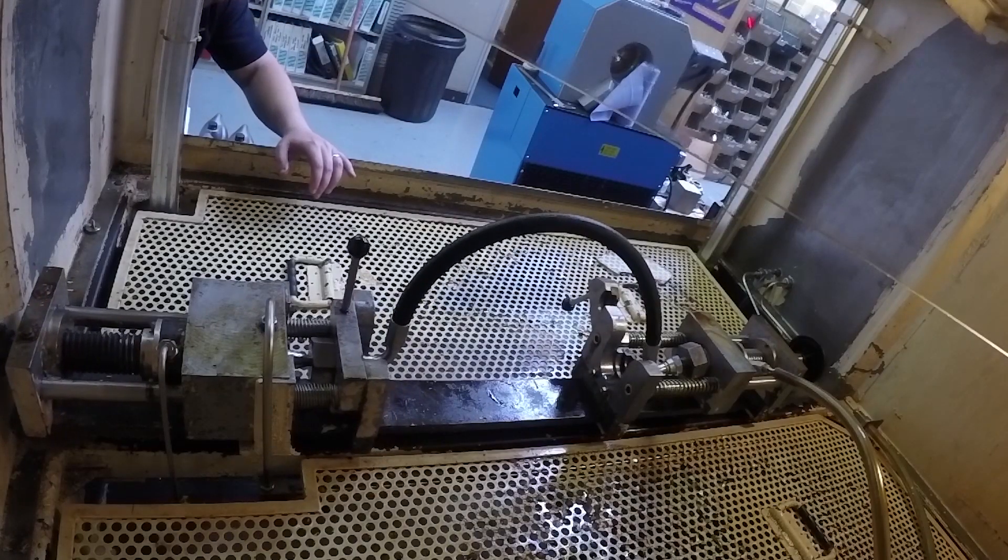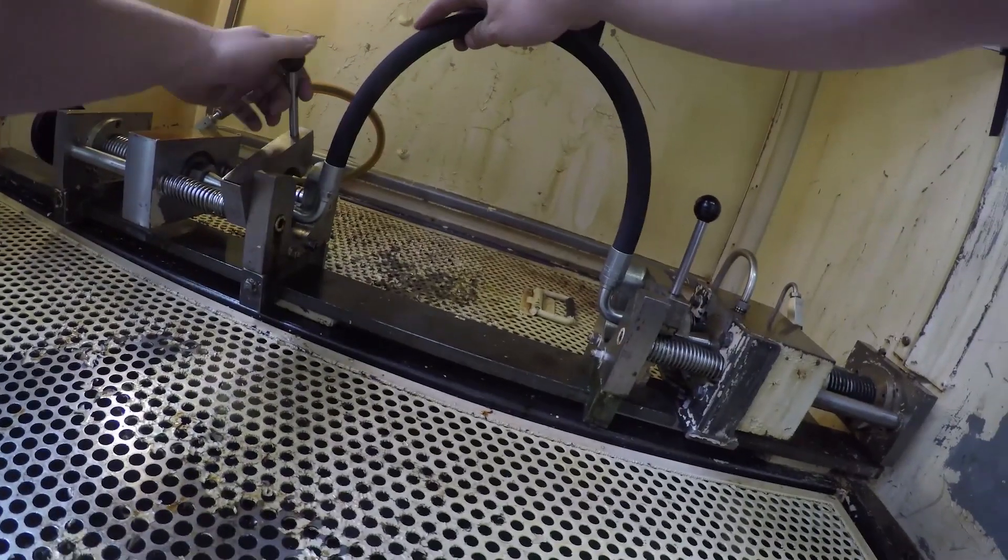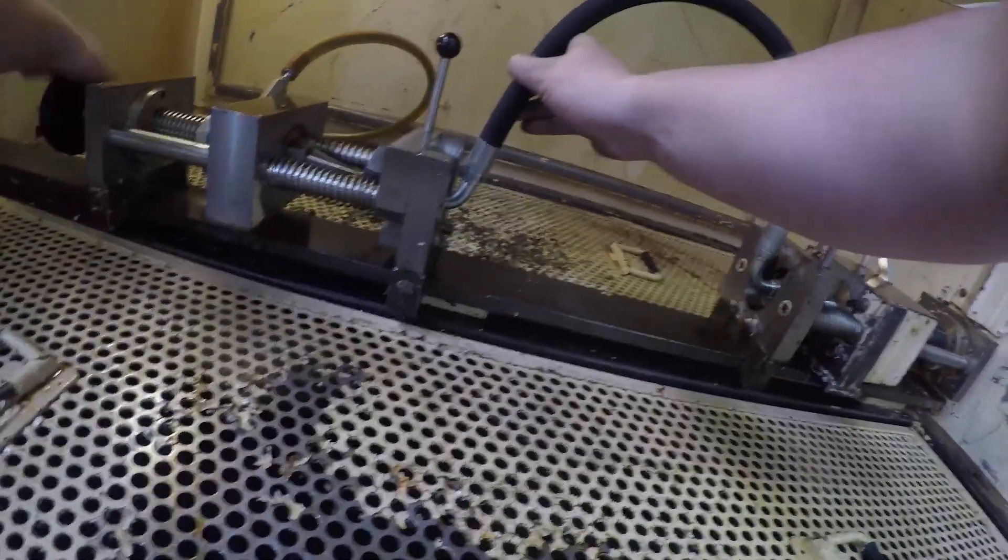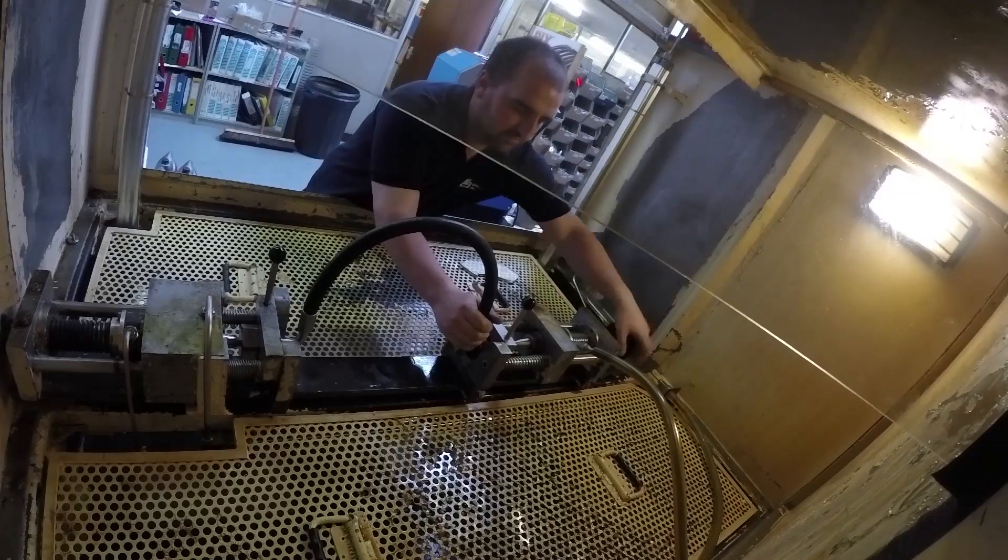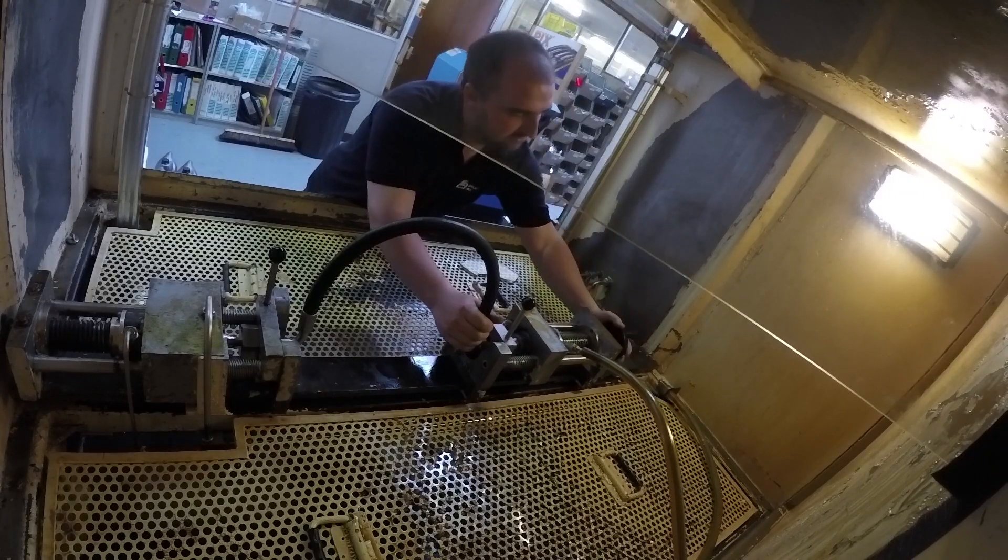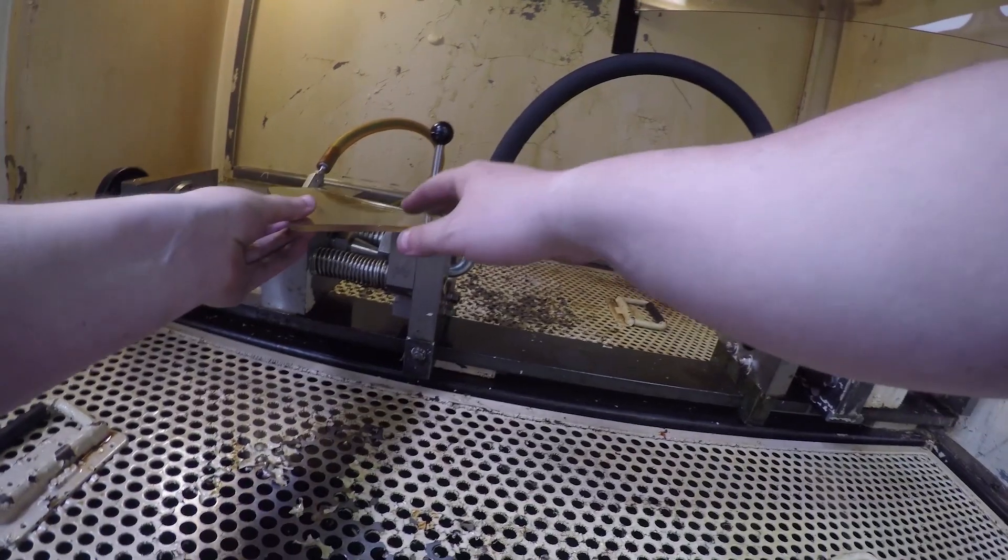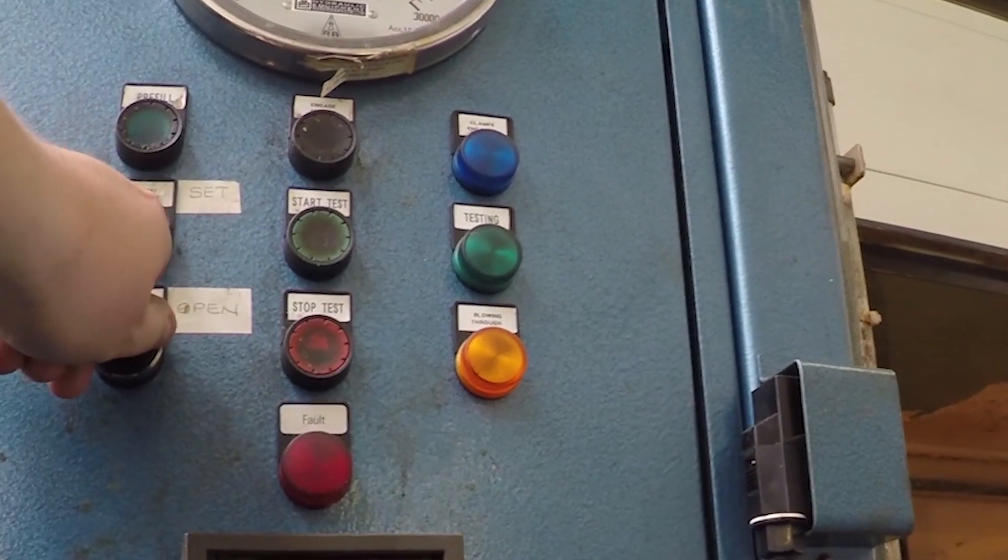Once you're happy with the lay of the hose within the machine, fasten with the wheels on either end. Turn the wheel inside the machine back half a turn once done.